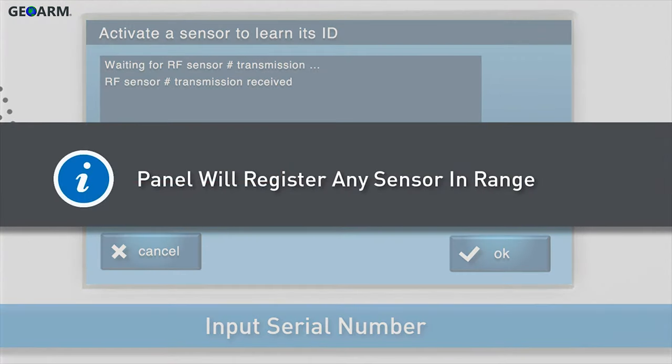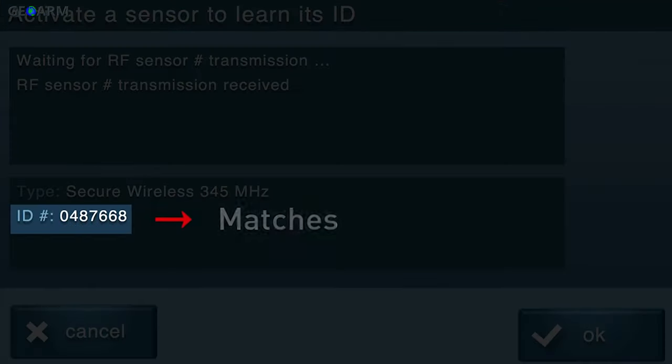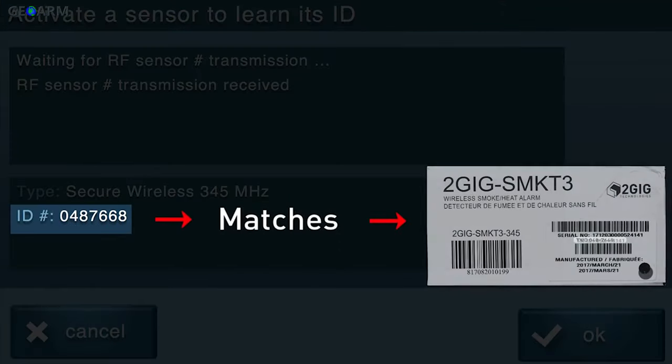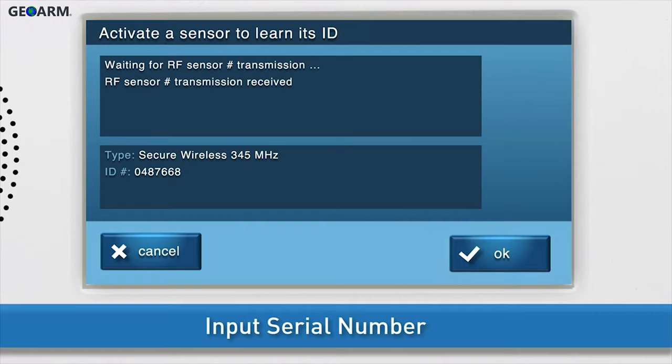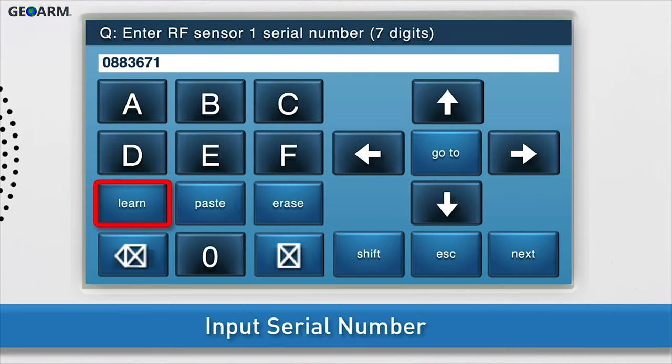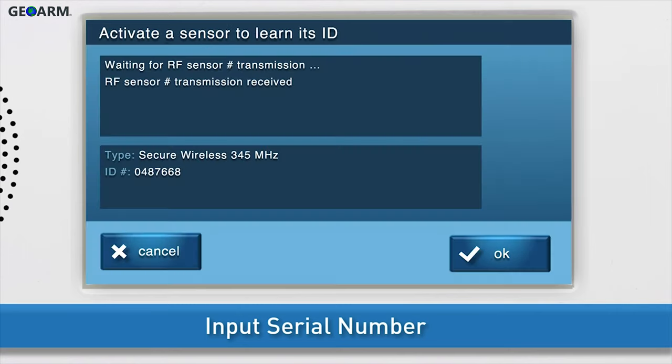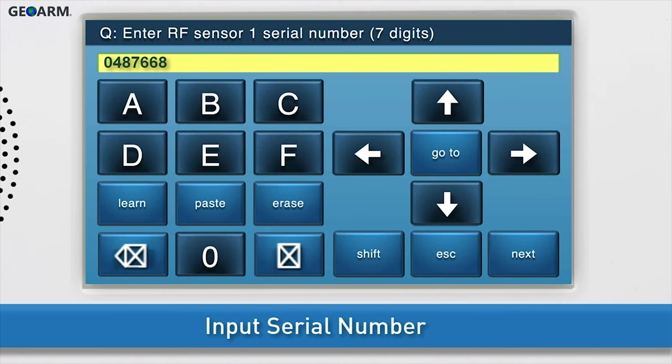Note, the panel will register any sensor within range, so you will need to make sure the ID number shown on-screen matches the serial number, or TXID, of the detector you are adding. If the ID numbers do not match, press LEARN once more and trigger the detector again. Press OK as soon as the correct ID number displays on-screen. You will see the serial TXID number in the answer box. Press the down arrow to go to the next sub-question.